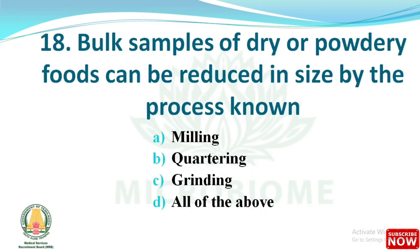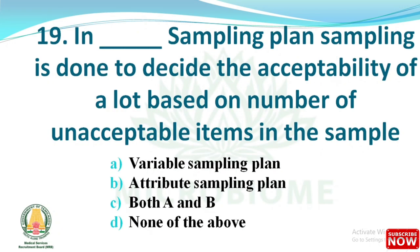Next question: bulk samples of dry or powdery foods can be reduced in size by a process known as what? The options are milling, quartering, grinding, and all of the above. The right answer is option B: quartering.